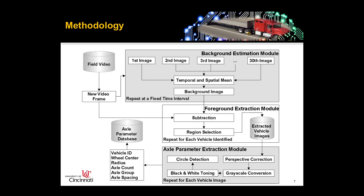The next model is the axle parameter extraction model. Based on the extracted foreground image, we further identify the axles. That includes four steps: perspective correction, grayscale conversion, digitizing to a binary image (black and white), and then circle detection focusing on the wheel or tire to identify the number of axles. Those data are then stored in the database.